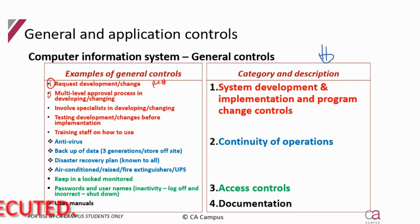There needs to be multi-level authorization for that request, because this is a massive change — this isn't just authorizing a sales order; this is changing the information system that forms part of internal control. Specialists need to be involved to help develop or make the change, it needs to be tested before it's implemented, and then people need to be trained on how to use it.